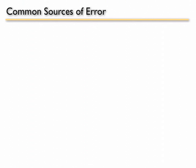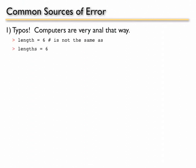So the last part of today's chat, we're going to go over some of the things that might make you pull your hair out. But just try to keep your sense of humor. Once you learn these things, it'll just be a piece of cake. So here are the common sources of error. 99.5% of errors are typos. R does not like typos. Computers are very anal that way. So length equals 6 is not the same thing as lengths with an S or plural equals 6.